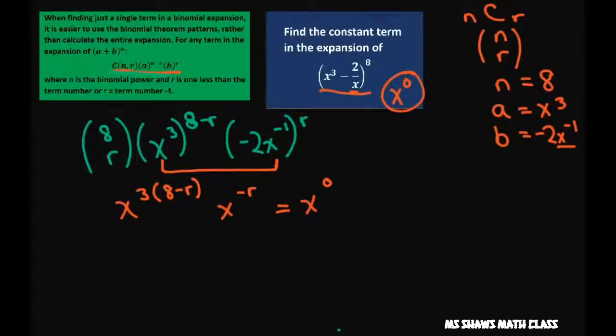I have x to the 24 minus 3r times x to the negative r equals x to the zero power. We're going to combine this using our product property of exponents. 24 minus 3r minus r equals x to the zero power. Now since my bases are the same, I can just solve for r.